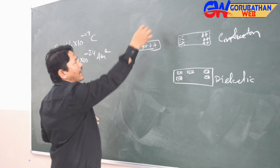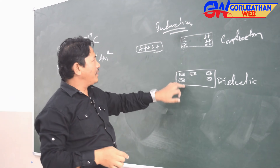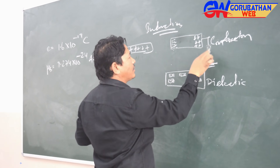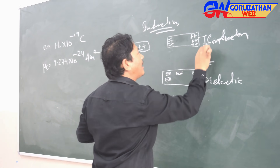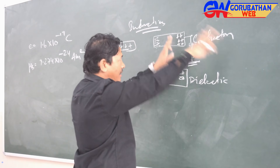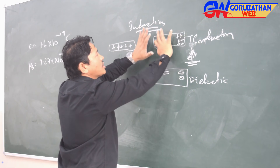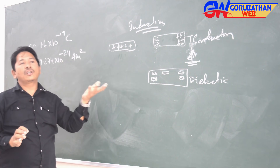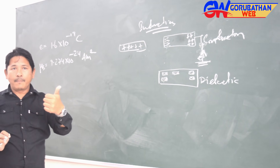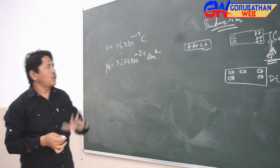To summarize induction: the body isn't simply charged, but charge separation happens. If you connect the far end to earth, electrons from earth can neutralize the induced positive charges. When you remove the inducing body, the negative charges spread over the body and it becomes negatively charged. So there are two methods of charging: friction and induction. This concludes the introduction of the first chapter.